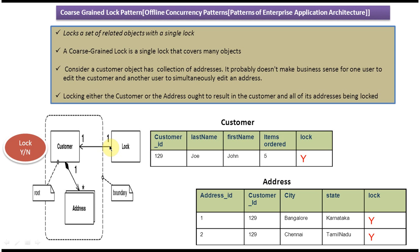Suppose user A has taken this customer information — we should not allow user B to change either the customer information or the address information. If user B changes either, whatever user A modified will be affected. To avoid that, whoever takes the customer information first must put the lock, so that the second or third user can't change the customer and address information. That is what the coarse-grained lock pattern says.